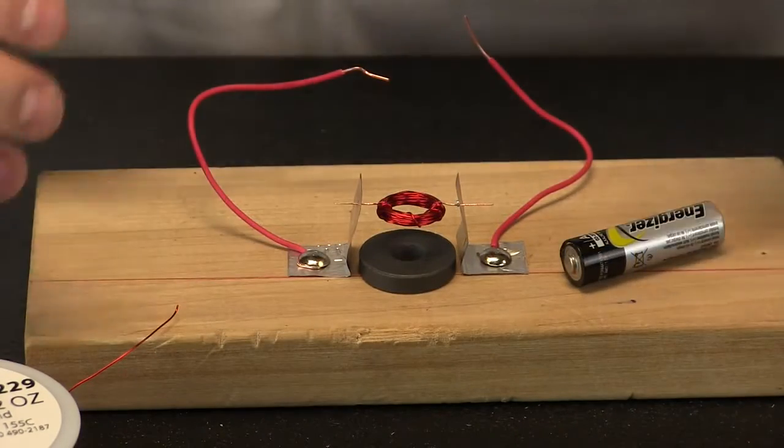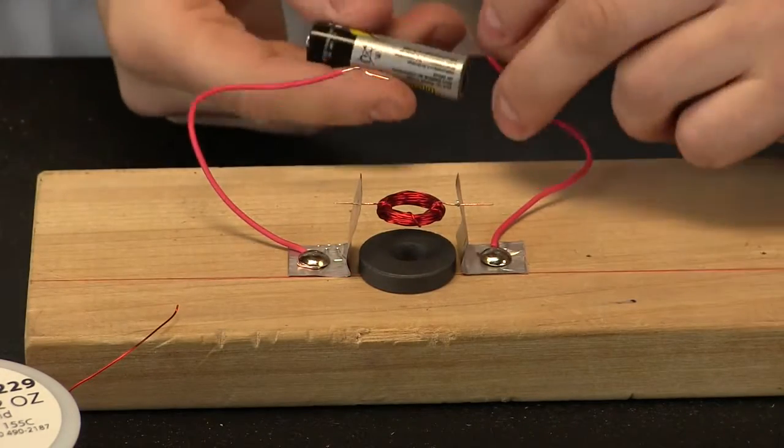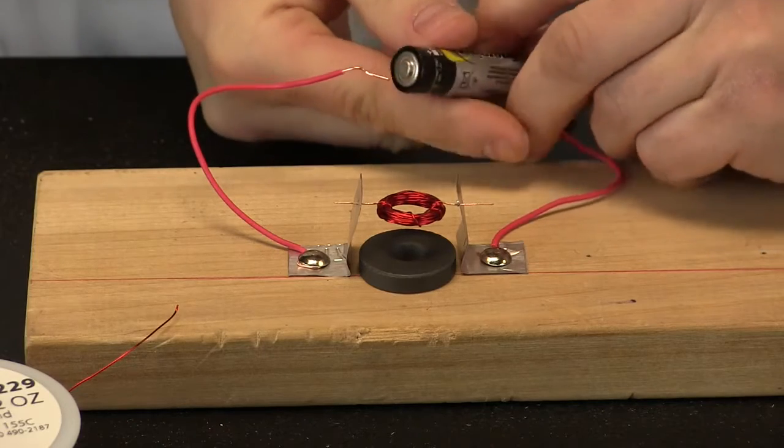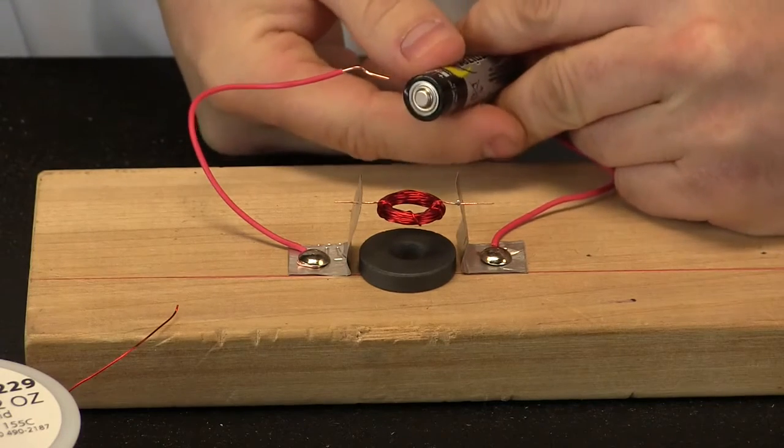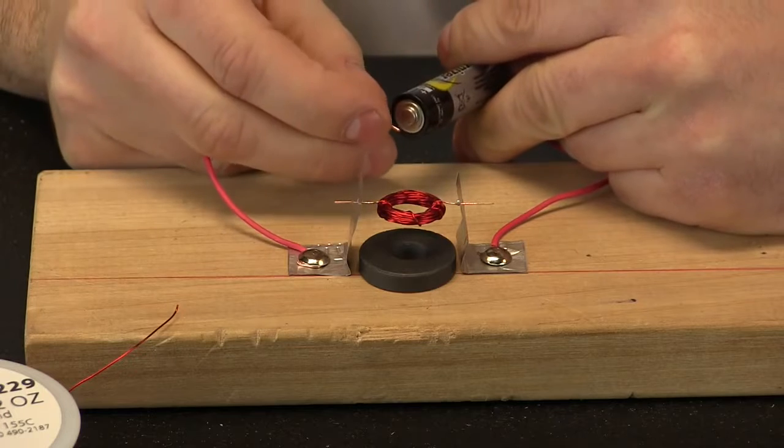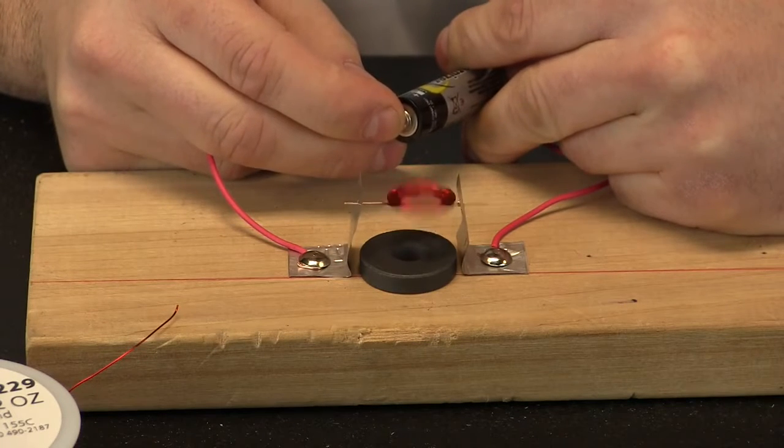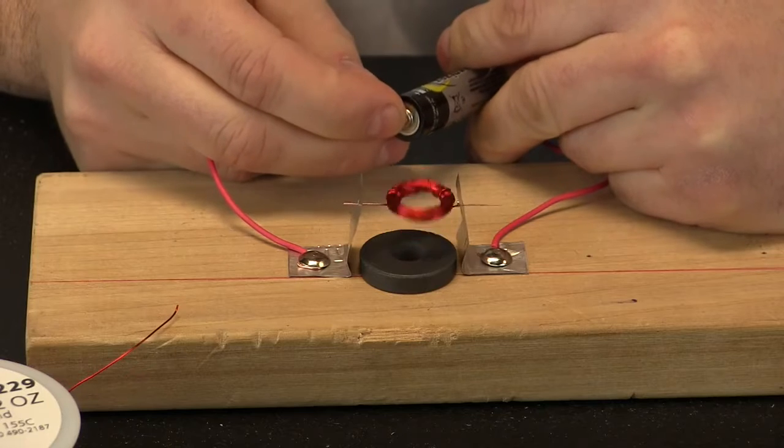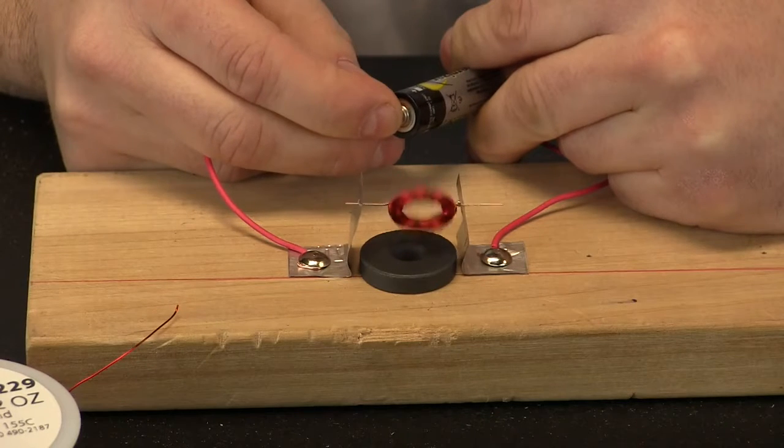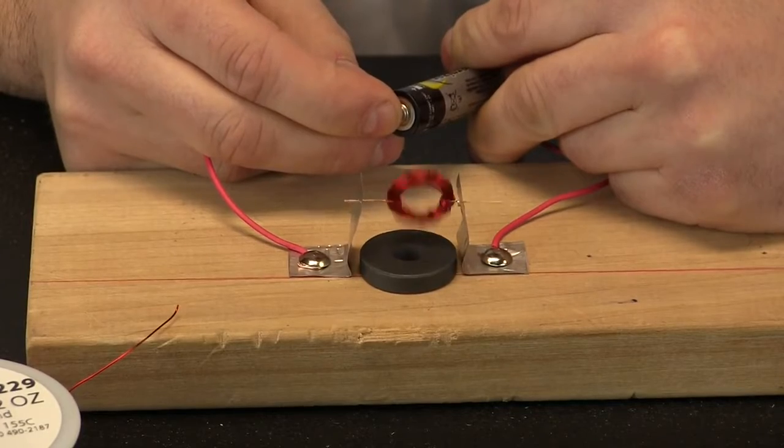Let us see if we can see those two forces working together. So now I am going to try and attach my battery to create a force. The magnet already has a force. Let us see if we can get our motor to work. And there we go. The push and the pull of the electric motor. Two forces working together.